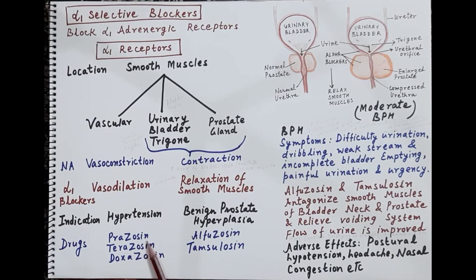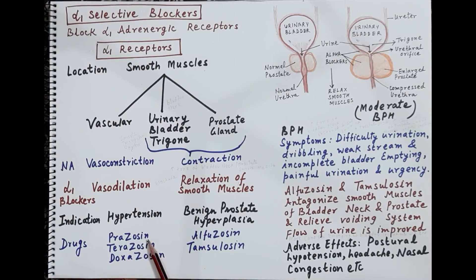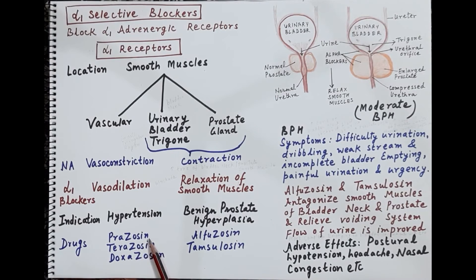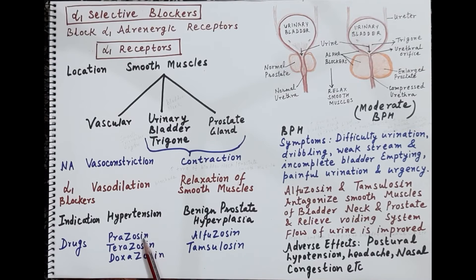The selective alpha-1 blockers which block alpha-1 receptors include prazosin, terazosin, and doxazosin. These are used for the treatment of hypertension because they reduce blood pressure.